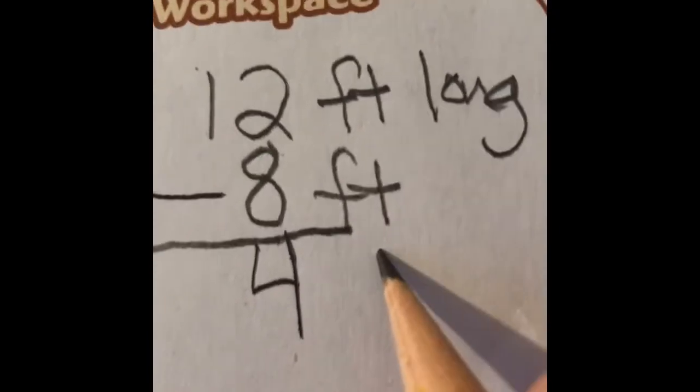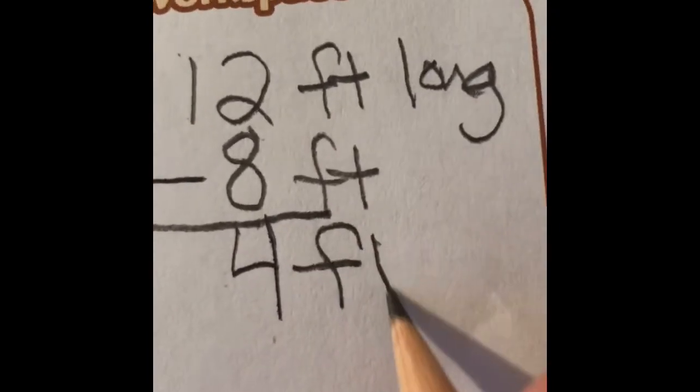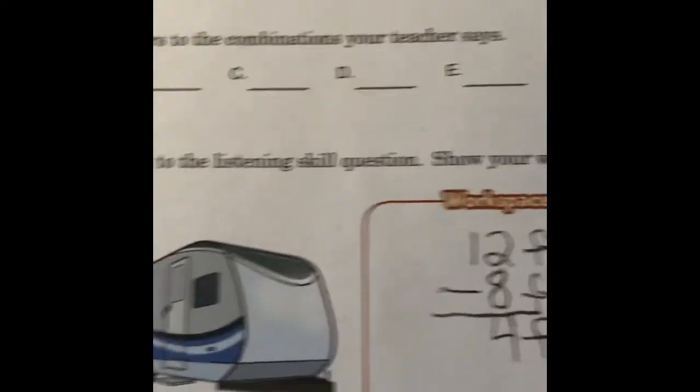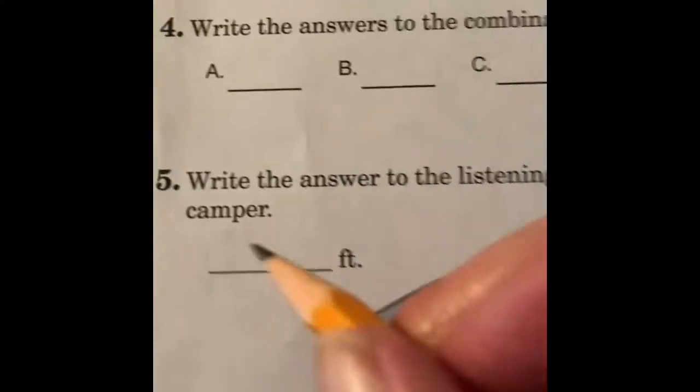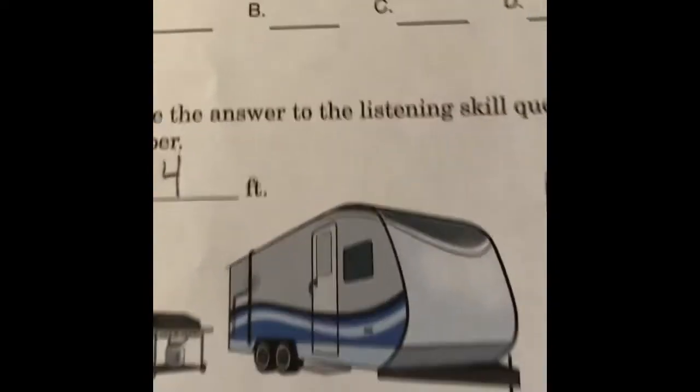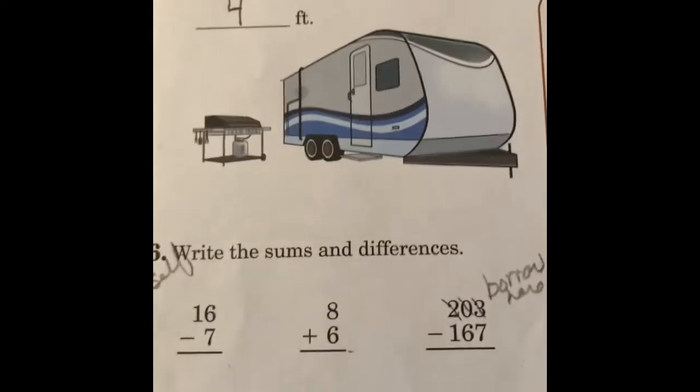So, the difference is 4 feet. The difference of the other camper is 4 feet. So, then I come over here and put 4 because 4 feet. Okay, number 6.